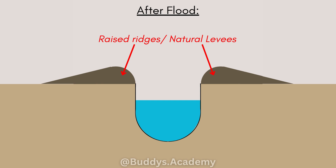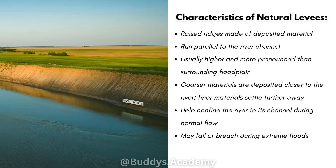So what are some characteristics of natural levees? Firstly, the raised ridges are made of deposited material. Secondly, they run parallel to your river channel, along your riverbanks. They are usually higher and more pronounced than the surrounding flat plain. Your coarser materials are deposited closer to the river and your finer materials settle further away.